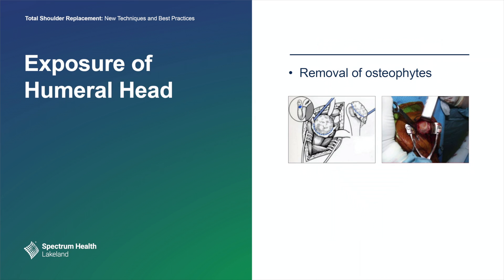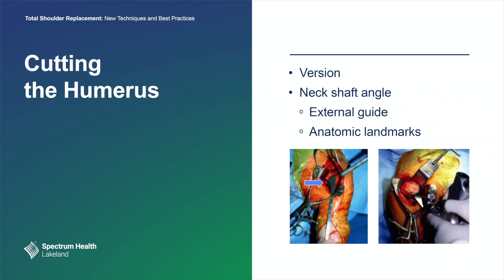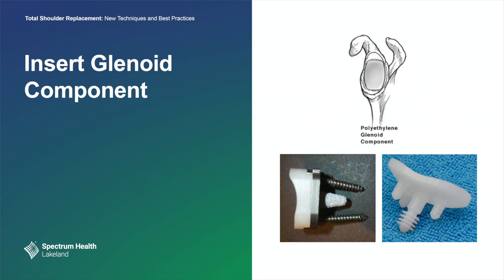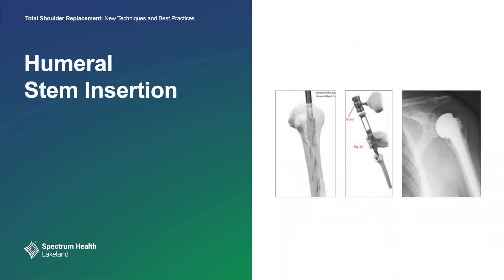Then we expose the ball, known as the humeral head. We remove bone spurs, which are known as osteophytes. We make a cut in the humerus to remove the ball, using guides that allow us to do this very precisely to minimize the risk of dislocation. After that, we expose the socket, and on the socket we place a component called a glenoid component. This fits directly on your socket, embedded either with screws or cemented. Then we put the stem down the canal of the arm bone — the humerus — and on top of the stem is a ball, which we then place against the socket.